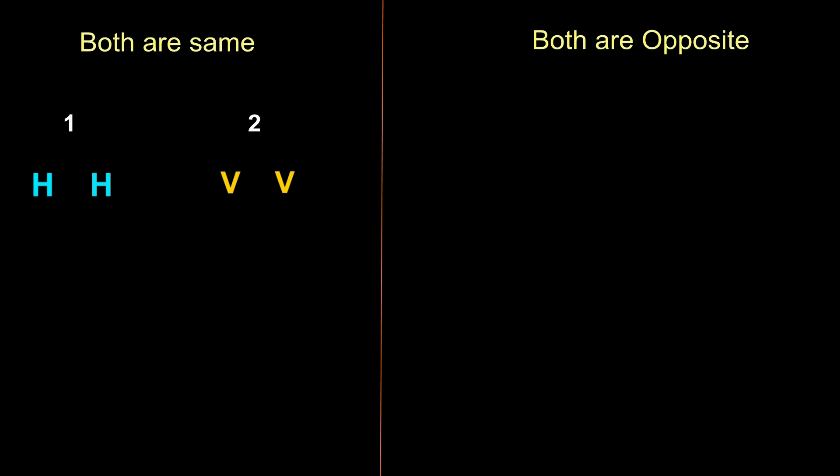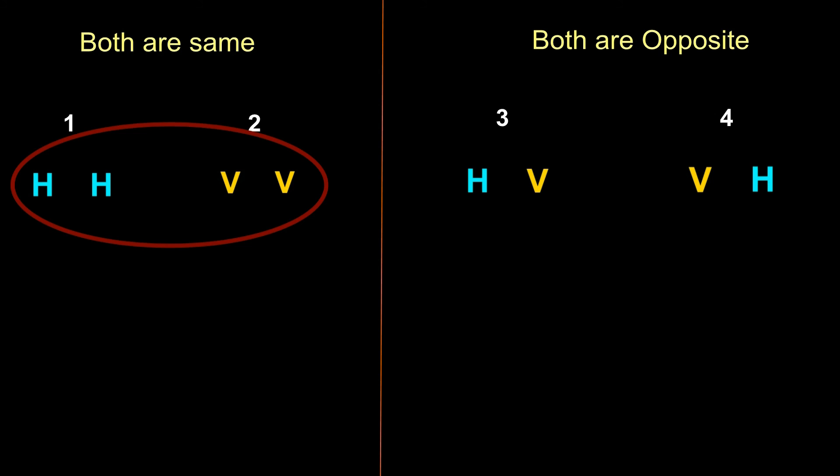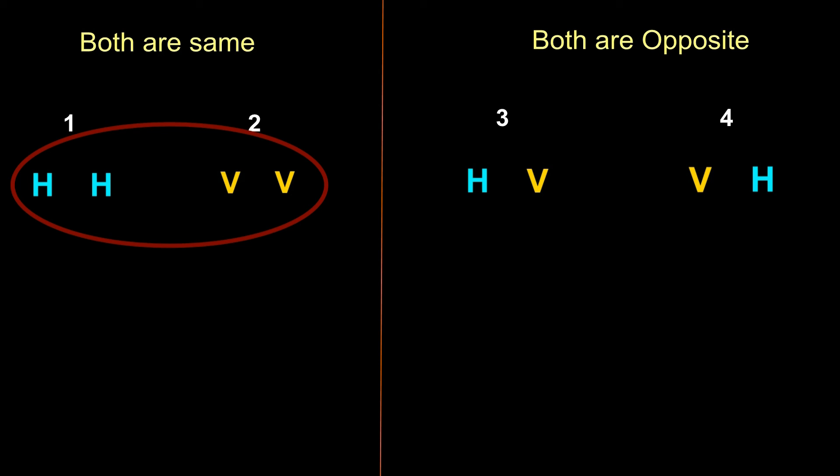While measuring any one of two entangled photons, both always end with the opposite or same polarization. If both are the same, they can be in two possible states: horizontal or vertical. And there are also two possible states if both are different: horizontal-vertical or vertical-horizontal. If both photons are in the same state, it's not an interesting or special state because we cannot see wave behavior here — both will always exhibit the same state. This non-waving state is denoted by the Greek letter phi.